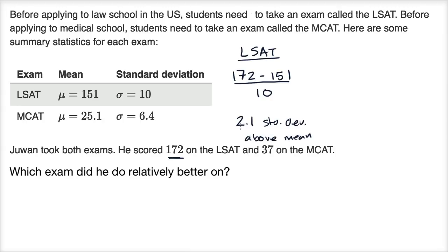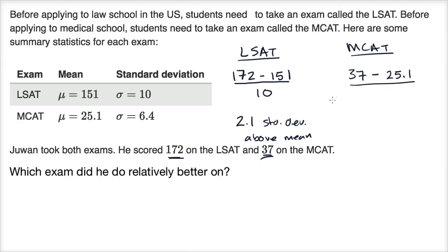You could view this as a z-score — it's a z-score of 2.1, meaning we are 2.1 above the mean in this situation. Now let's think about how he did on the MCAT. On the MCAT, he scored a 37, the mean is 25.1, and there is a standard deviation of 6.4.